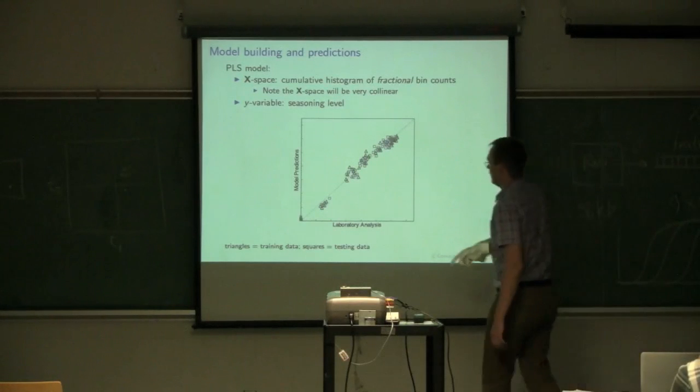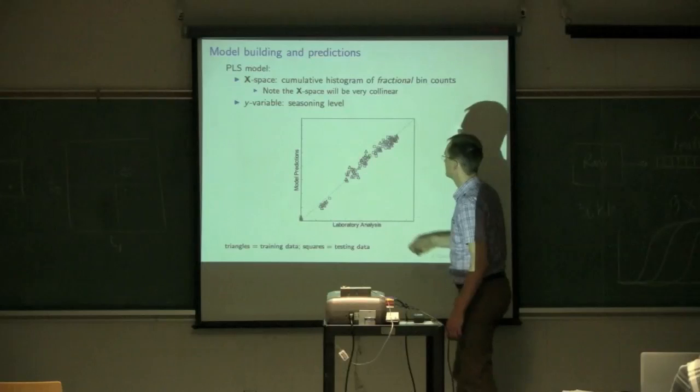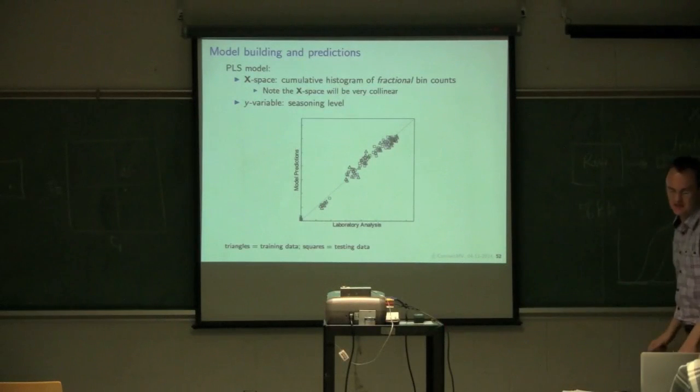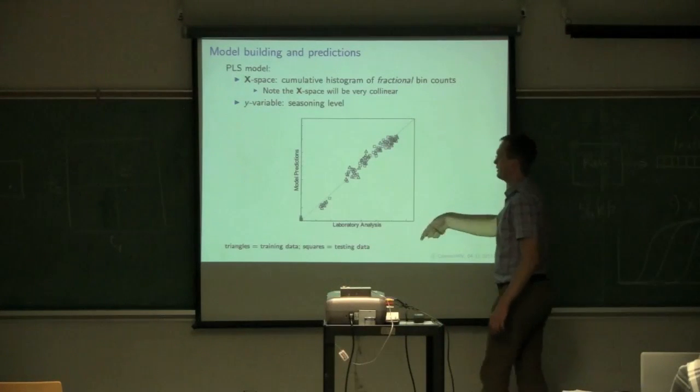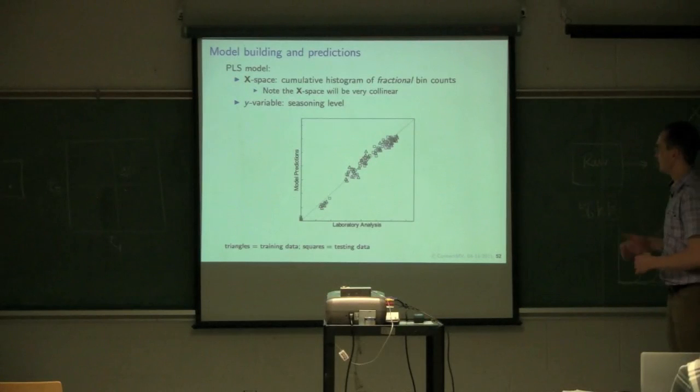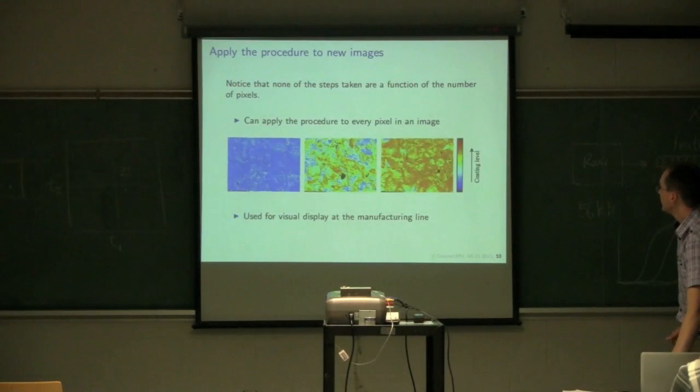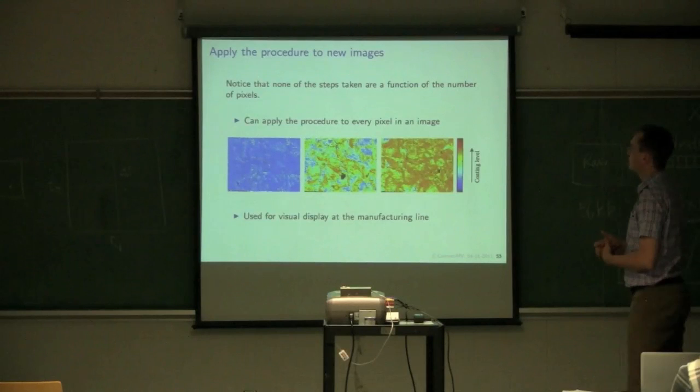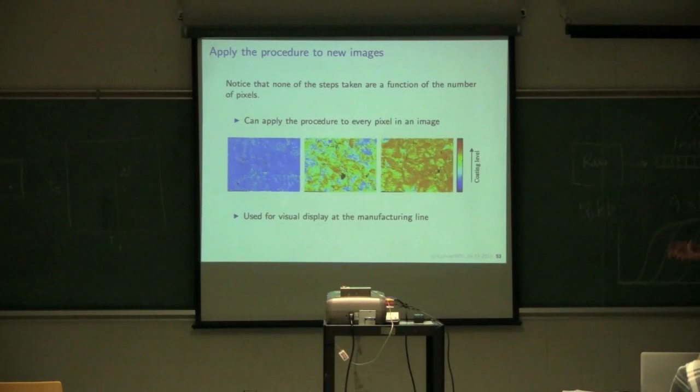Here's the results. The triangles represent the training data. The squares are the testing data for this very small subset. So pretty good predictions and the company was very happy with this and in fact went ahead and put it online at that point in time. After they did that, Honglu realized, well, you know what? We could go look back at the method that we developed and realize that that algorithm can be applied to an image of any size.